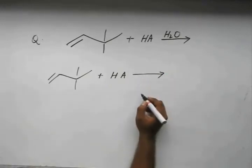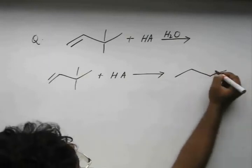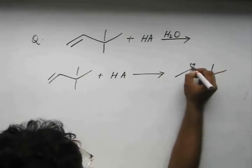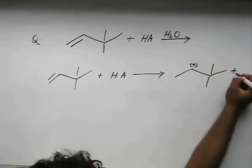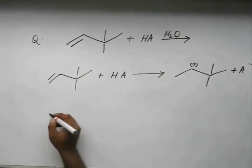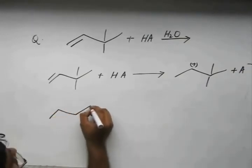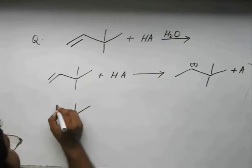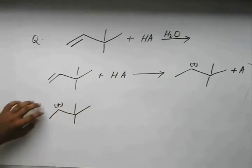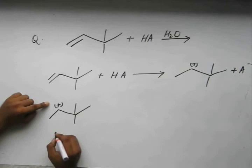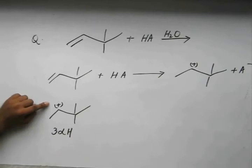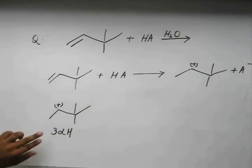We are left with carbocation like this plus the conjugate base. Now here comes the tricky part. We have a 2 degree carbocation with number of hyperconjugable forms as 3. It has 3 alpha hydrogens thereby meaning it has 3 hyperconjugable structures, 3 non-bonding resonating structures.